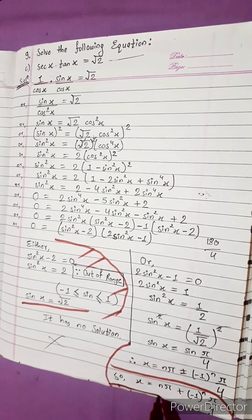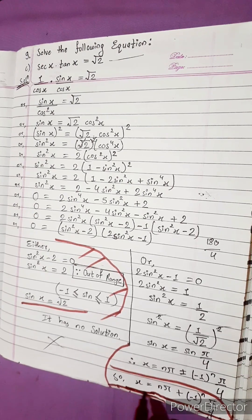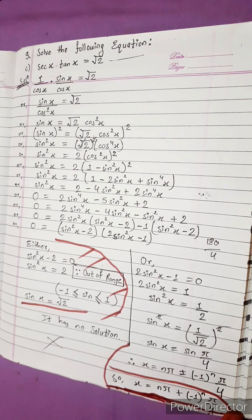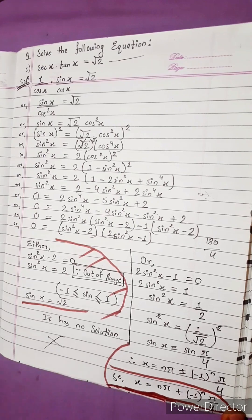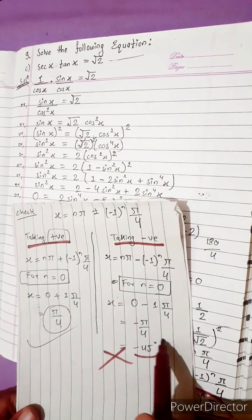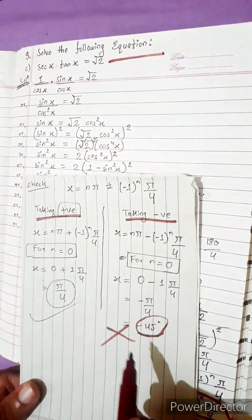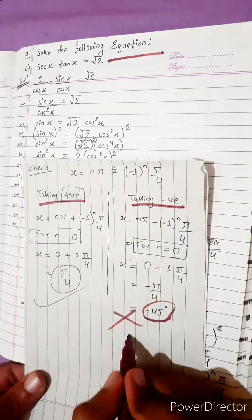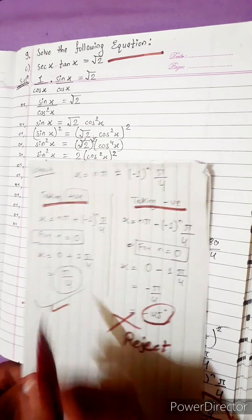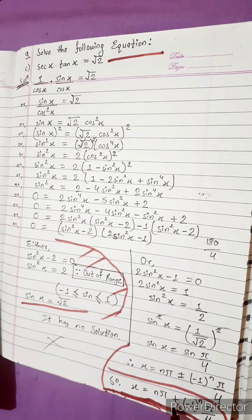This is our answer. And how we got this answer? By solving positive and negative. Negative, minus 45, putting this in the equation, we do not get a value. So negative is rejected — reject this negative and take only positive. So in this plus-minus, we wrote only plus. Be ready for the next question.